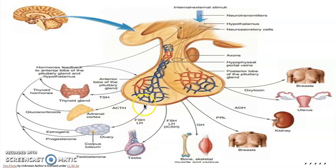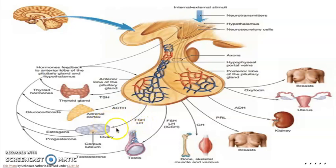Follicle stimulating hormone has an effect on the gonads — the testes in males and the ovaries in females. It helps the maturation of the egg in females and the production of sperm in the testes. Luteinizing hormone, another gonadotropin, also acts on the ovaries and testes, stimulating the ovaries to produce estrogen and progesterone, and stimulating the testes to produce testosterone. Prolactin, released from the anterior pituitary, stimulates the mammary glands of the breast to produce milk. The pituitary gland also secretes endorphins, which help control pain.